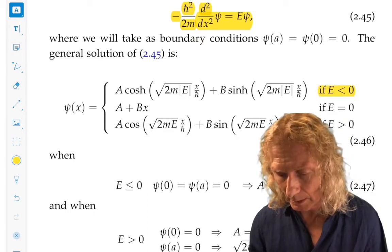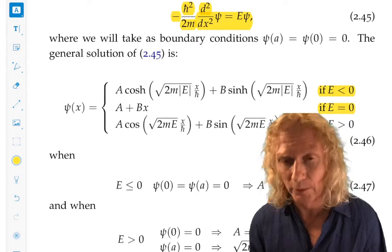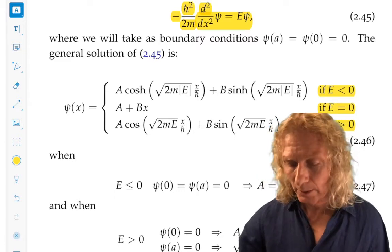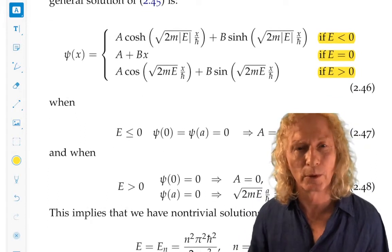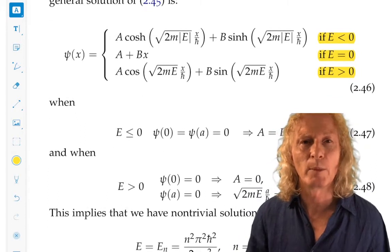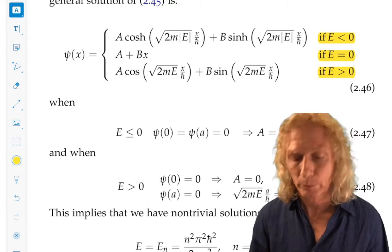And there are three possibilities for solutions: E less than zero, E equals zero, and E greater than zero. Verify to yourself that these are solutions, because these types of solutions are going to come up in this chapter over and over and over.